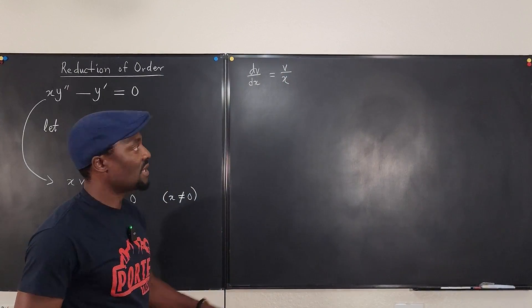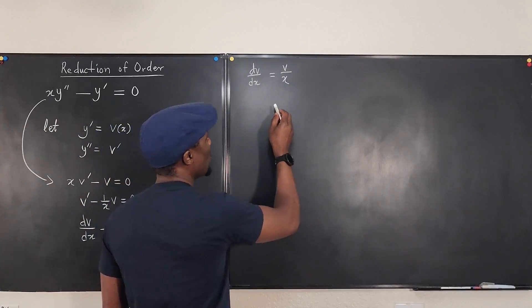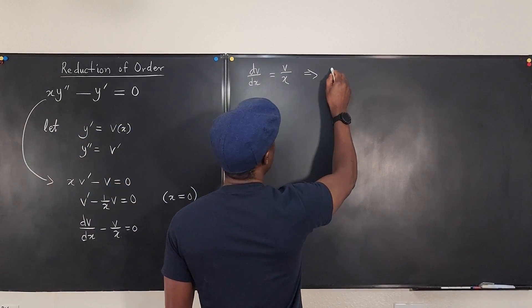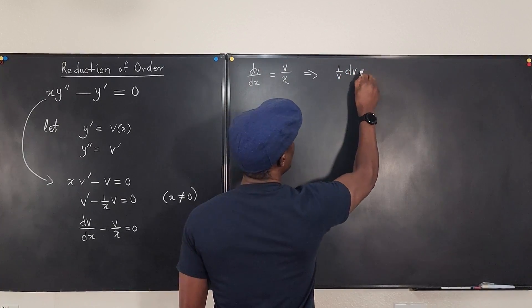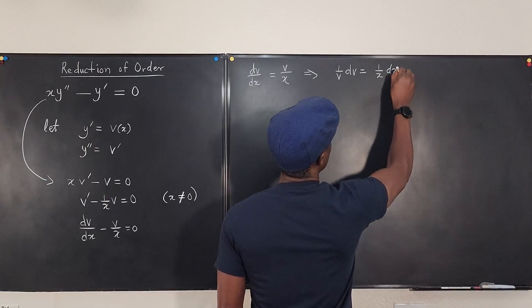Clearly, this is separable because I can bring the v here and take dx to this side. So what do I have? This implies that I have 1 over v dv will be equal to 1 over x dx.